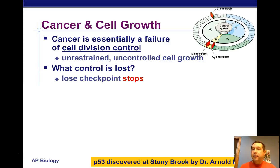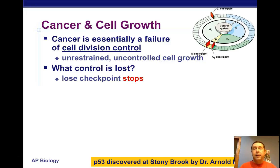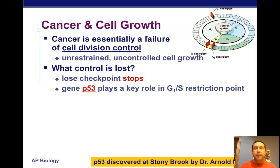What is lost? The checkpoint is where we would normally stop abnormal cells from dividing, but in cancer, the cell skips through those checkpoints even when it doesn't meet the criteria. P53, which was discovered at Stony Brook University by Dr. Arnold Levine, plays a key role at the G1/S checkpoint.